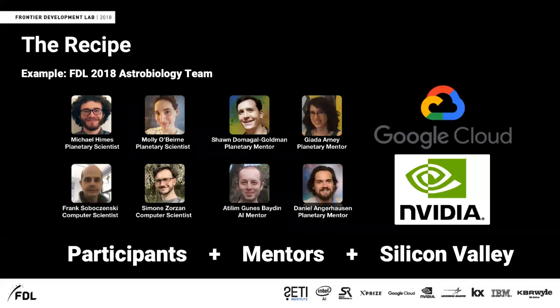And how that usually works. So the basic recipe of FDL is we take four participants. Great students, early career postdocs, usually two of them are domain experts in the field. In this case for the astrobiology team, we had Mike and Molly who were planetary scientists. And then add two students, great students, early career folks from the computer and big data science. In this case, Frank and Simone were more the computer science people. Then we have a bunch of mentors. Giada, me, Shawn, then Artim Guinness was our AI mentor.